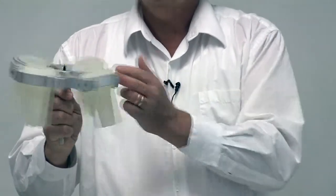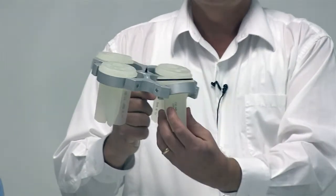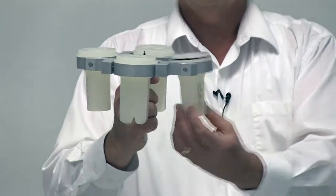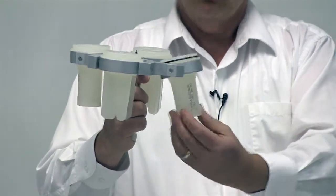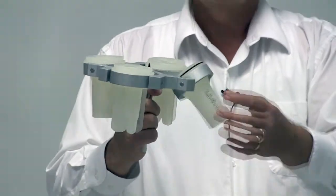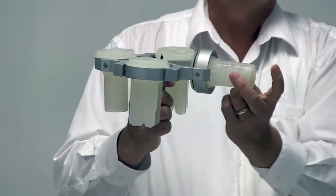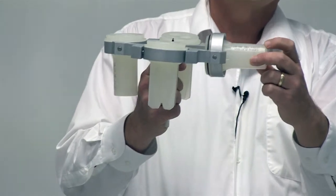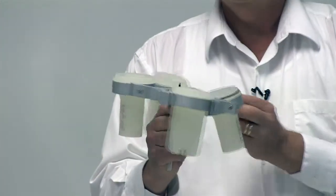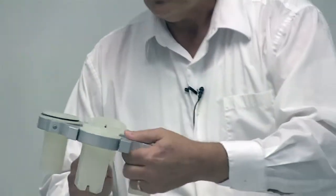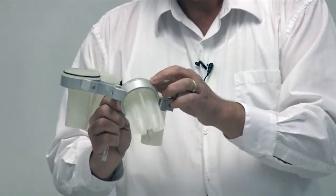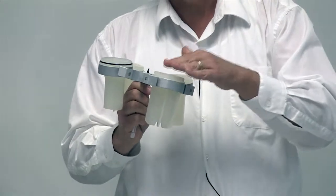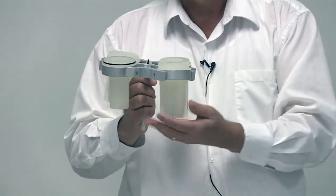You can see this is a swinging bucket rotor. As the rotor begins to spin, the buckets actually swing out into the horizontal position from their resting position of vertical, so that the force being applied centrifuges and pellets the material into the bottom of the tube. And that's the purpose of the centrifuge: to apply this force to sediment the materials.